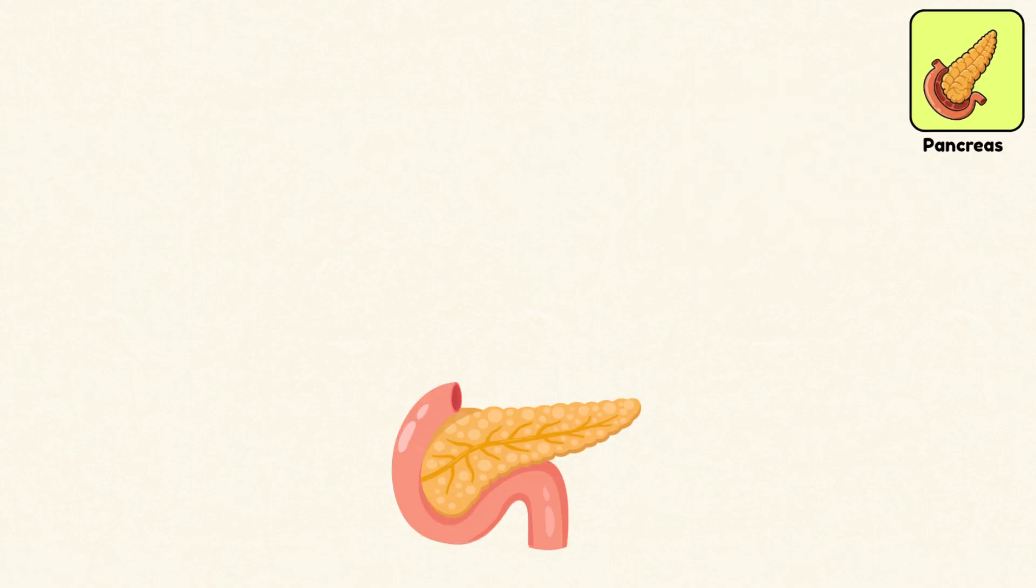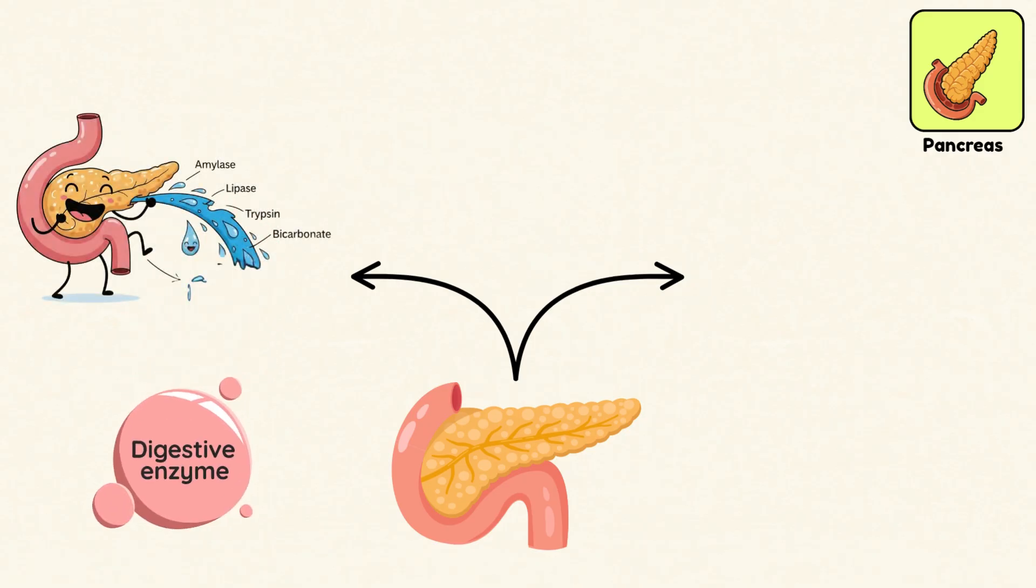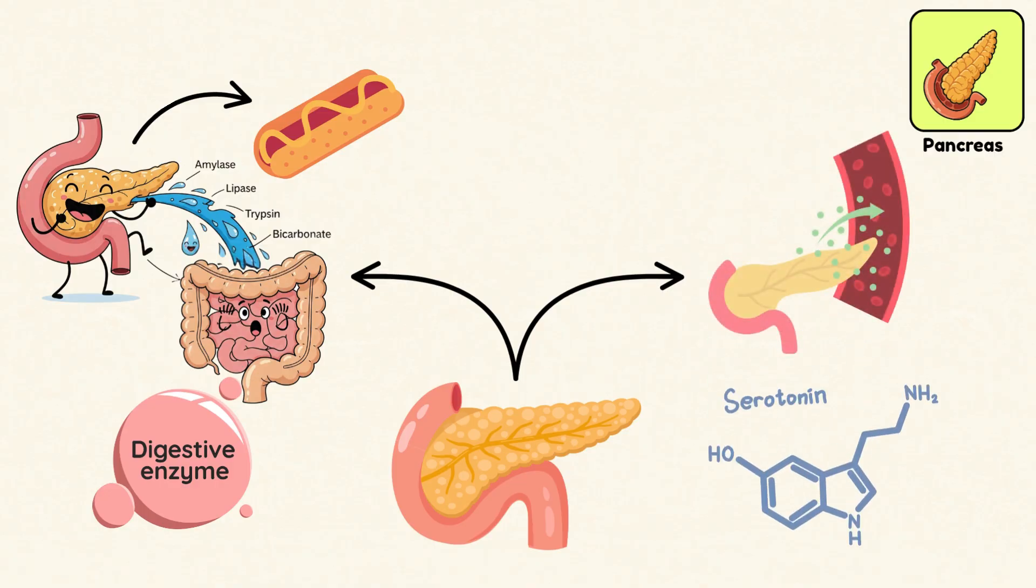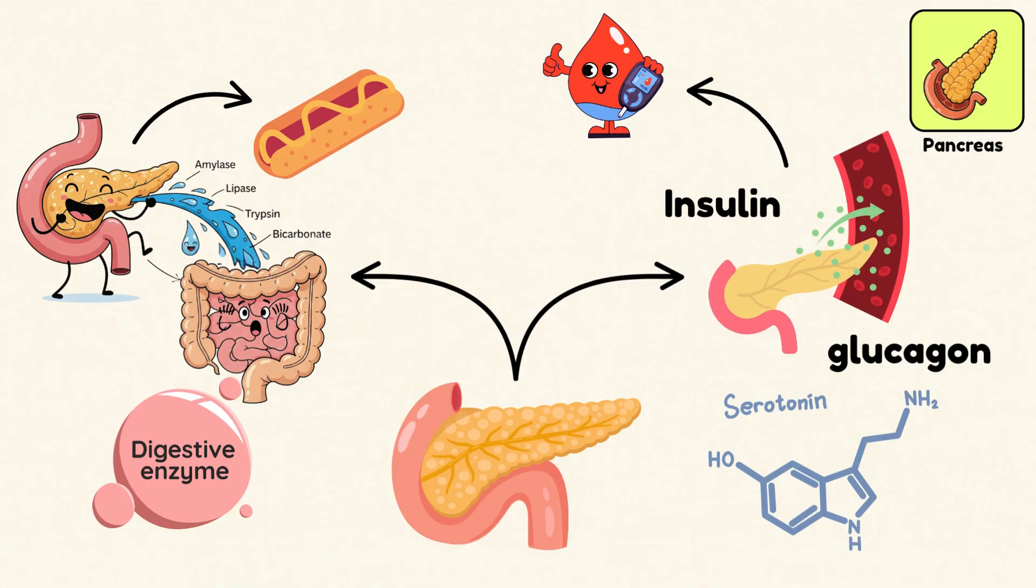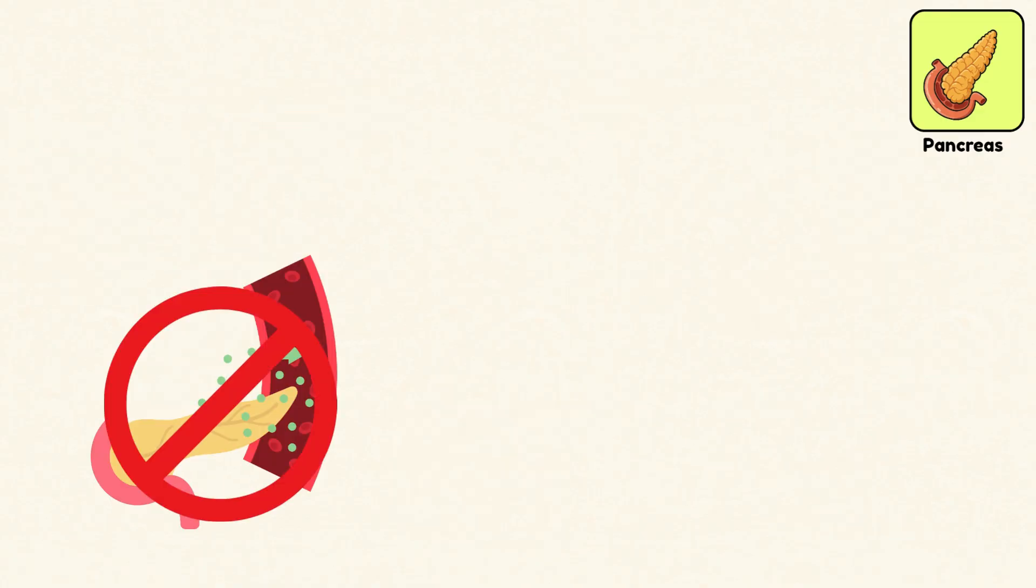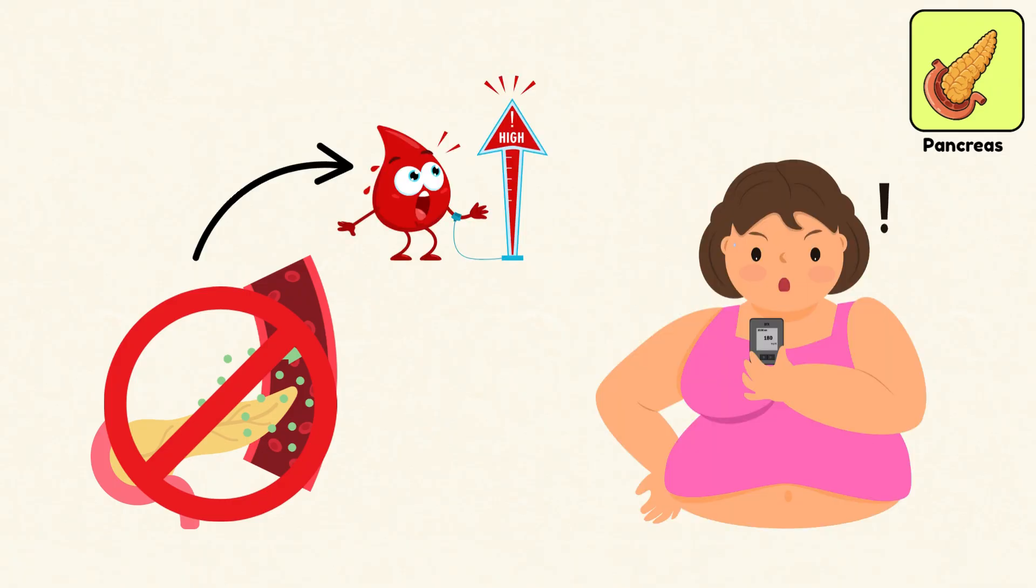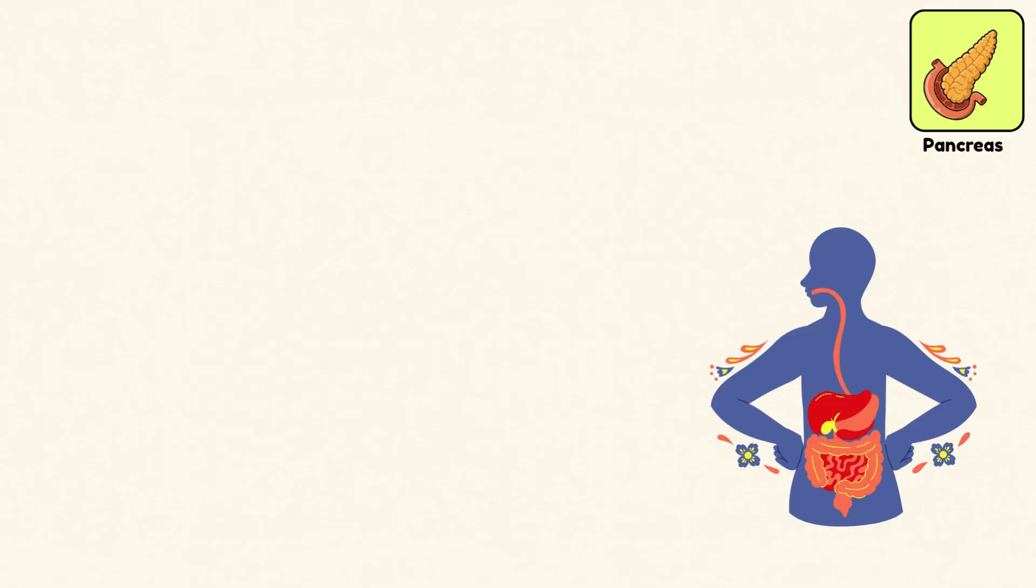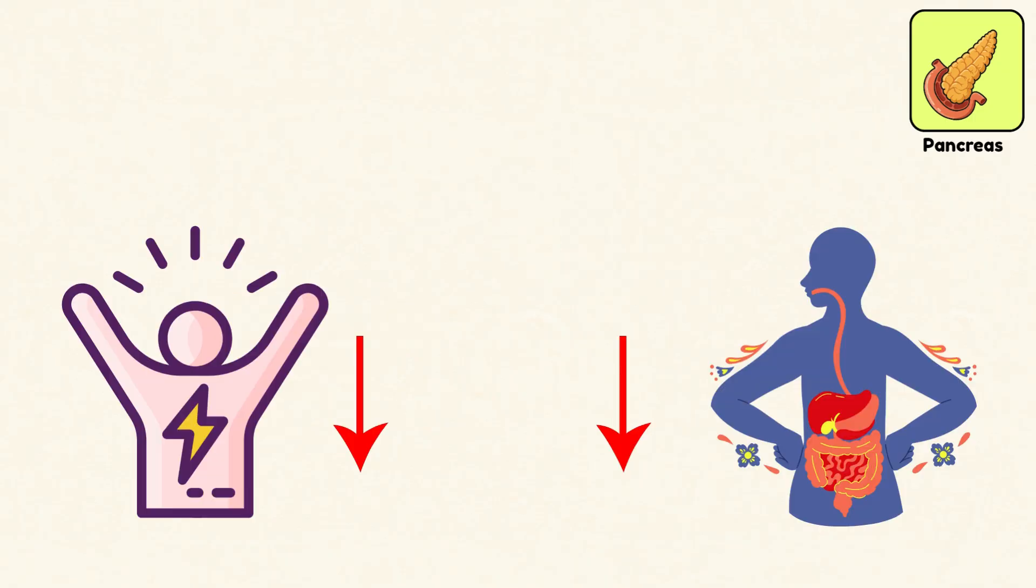Pancreas. The pancreas wears two hats. First, it's a digestive enzyme factory, releasing powerful chemicals into the small intestine to break down food. Second, it's a hormone hub, producing insulin and glucagon, the team that manages your blood sugar. If insulin stops flowing, blood sugar spikes, and that's how diabetes begins. Without the pancreas doing its job, both digestion and energy balance fall apart.